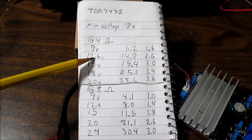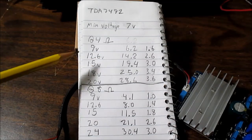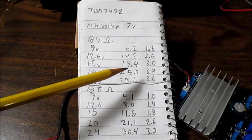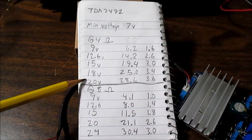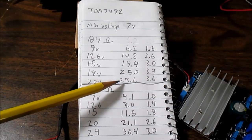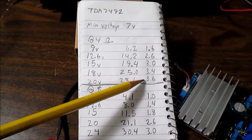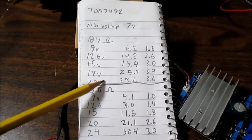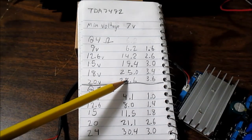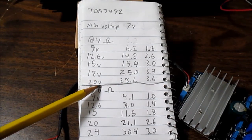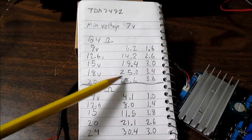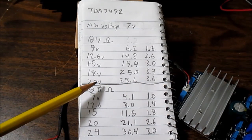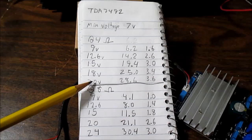So at 12.6 volts we got 14.2 watts. 15 volts, 19.4 watts. 18 volts, we got 25 watts. And at 20 volts, 28.6 watts, and it was drawing 3.6 amps. Now, this is pushing the limit right here. I would not use this voltage at 4 ohm loads. 18 volts is as high as I would go because I'm starting to see the effects that it's probably starting to hit current limit at 20 volts.